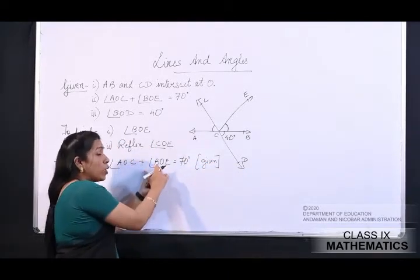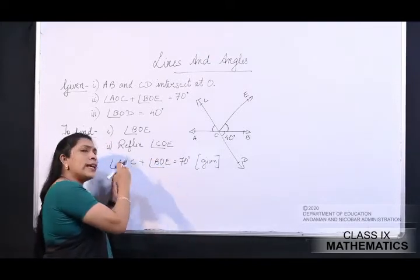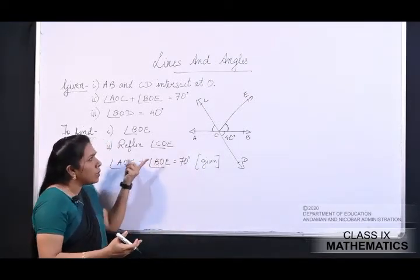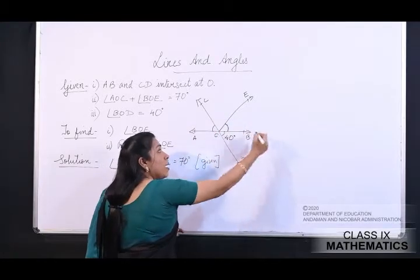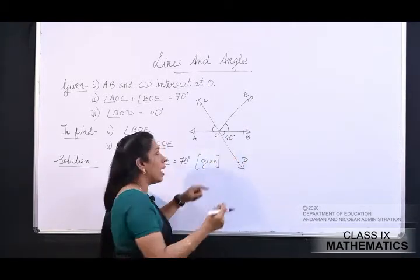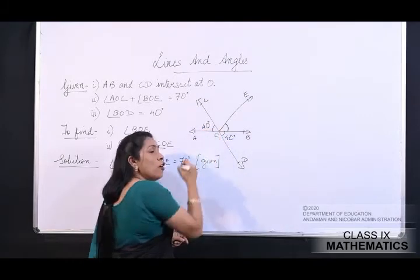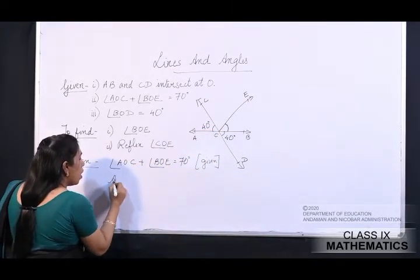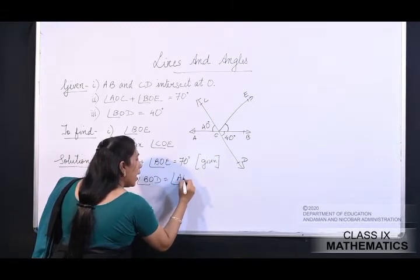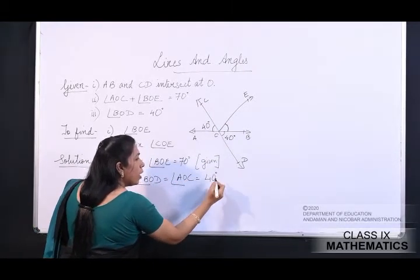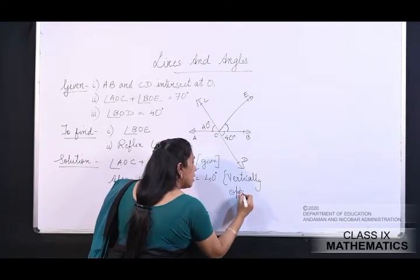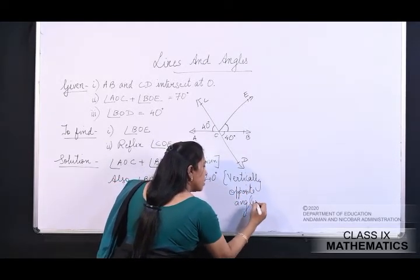Sabse pehle find out karna hai BOE. Angle AOC plus BOE is equal to 70 degree — this is given. Agar AOC mil jaye, BOE araam se mil jayega. Ham dekhte hain kya AOC gyaat kar sakte hain. Since these two lines are intersecting, vertically opposite angles are equal. Angle BOD is 40 degree, so AOC is also 40 degree — vertically opposite angles.